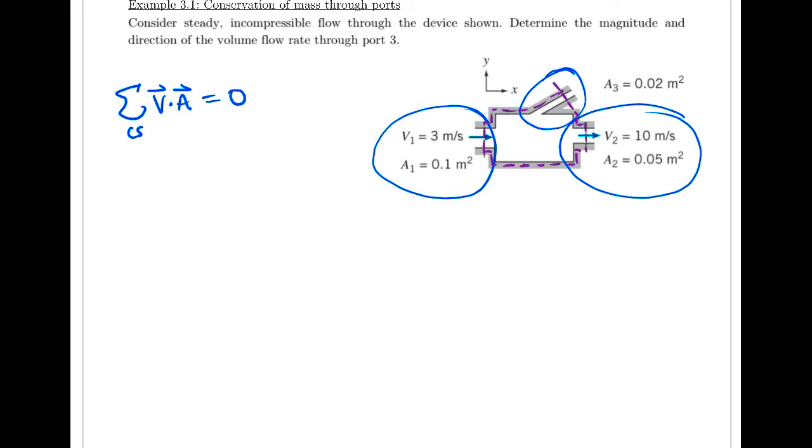So we see for this control volume here, for example, we have these three very well-defined surfaces with openings, and the rest of our control volume is sealed. So now we understand why we say control surfaces.